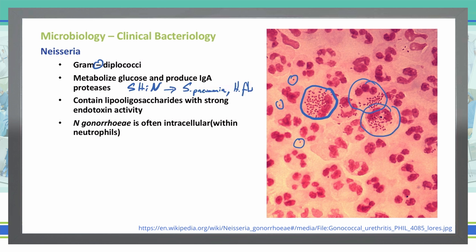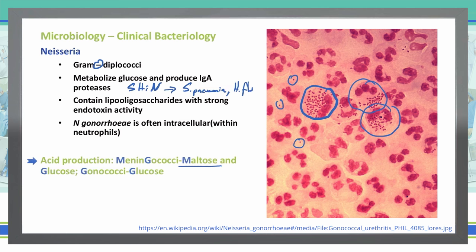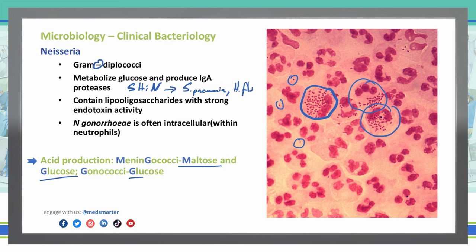A way that you can determine the difference between gonococcal and meningococcal is the acid production. Meningococci covers both maltose and glucose, whereas gonococcal only covers glucose. So you have the MG for meningococcal giving you maltose and glucose, and then gonococcal only has the G giving us just glucose.